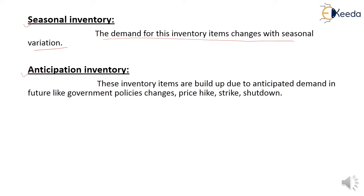What is anticipation inventory? Anticipation inventory are those items which are built up due to anticipated demands in the future — such as government policy changes, price hikes, strikes, and shutdowns. Due to price hikes, strikes, and shutdowns, our organization stocks some items. These stocked items are known as anticipation inventory.